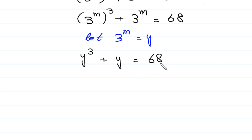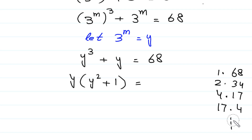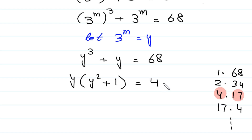Next, we factorize both sides. From y cubed plus y, we take y as common, giving y times (y squared plus 1) equal to 68. This 68 can be factored as 1 times 68, 2 times 34, 4 times 17, 17 times 4, and so on. From these pairs, we select the pair where one factor is one more than the square of the other factor. In the pair 4 times 17, 17 is one more than the square of 4, because 4 squared is 16 and 17 is one more than 16. So we select the pair 4 times 17.